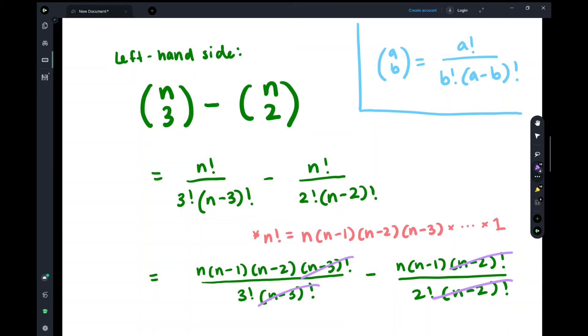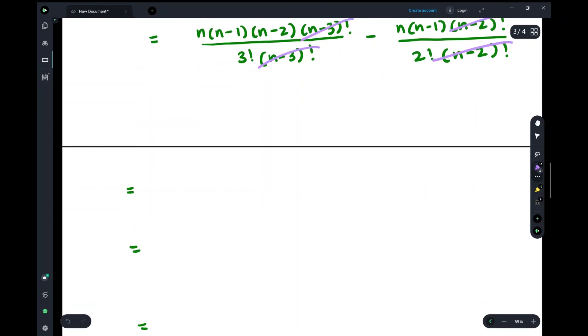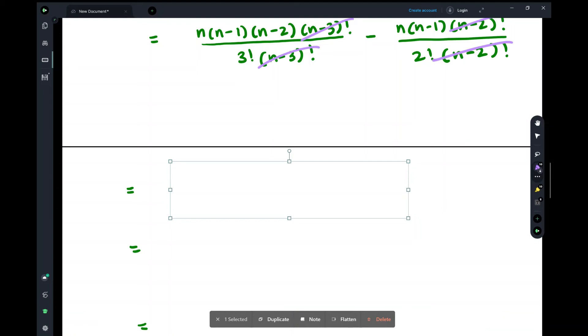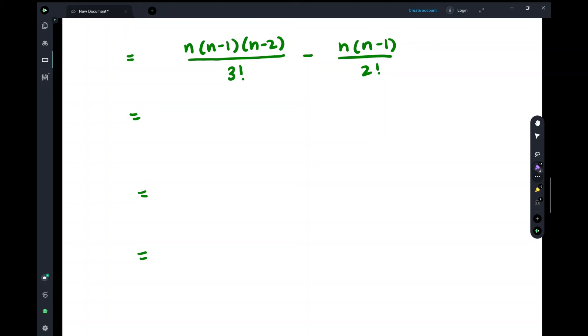So let's go forward and simplify this even more. We have n times (n minus 1) times (n minus 2) over 3 factorial, and n times (n minus 1) over 2 factorial. So that's what we're left with after simplifying and canceling out the extra factorial in the denominator. Now simplifying these, the denominators turn into 6 and 2, because 3 factorial equals 6 and 2 factorial equals 2.